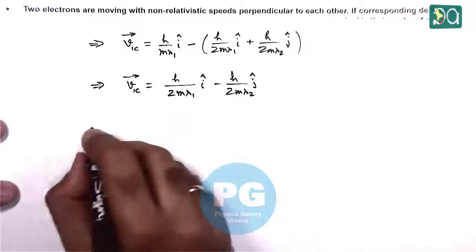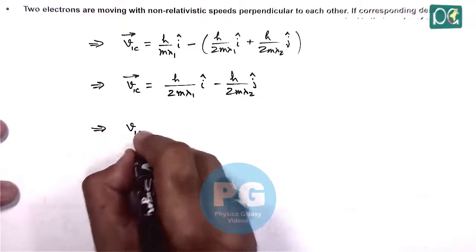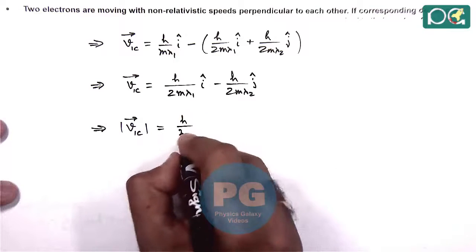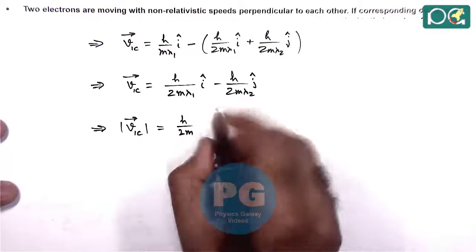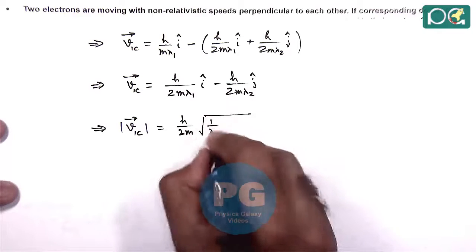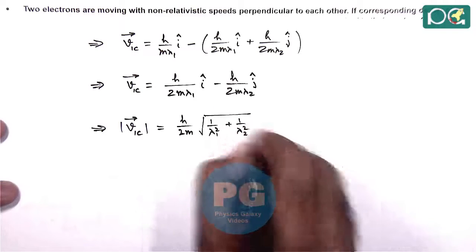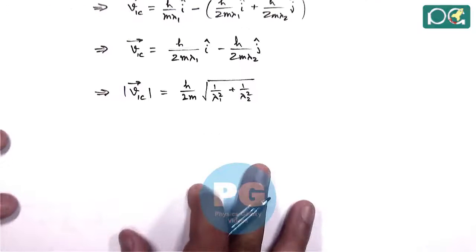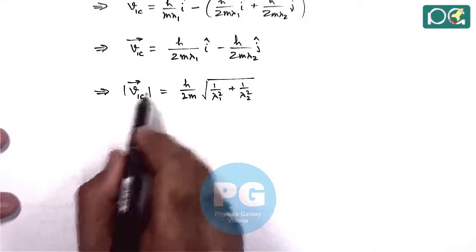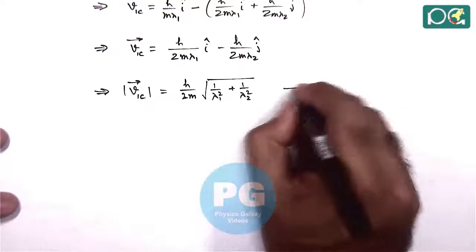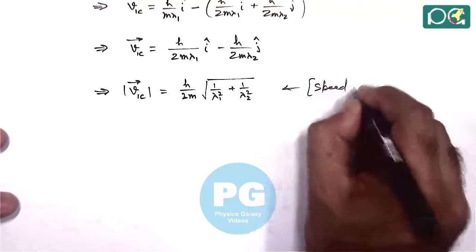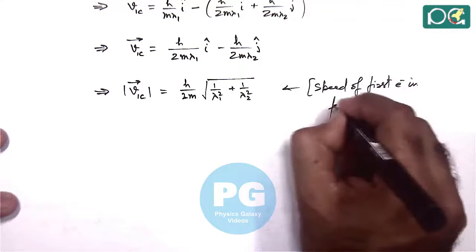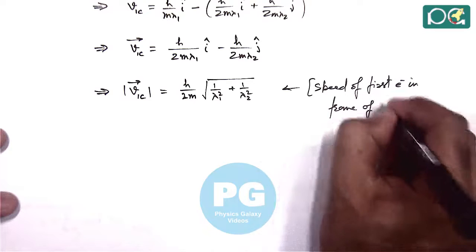We can now calculate the magnitude of the velocity of the first electron in the frame of the center of mass. Here h/(2m) gets common, and we get the magnitude as (h/2m) times the square root of (1/lambda1² + 1/lambda2²). This gives us the speed of the first electron in the frame of the center of mass.